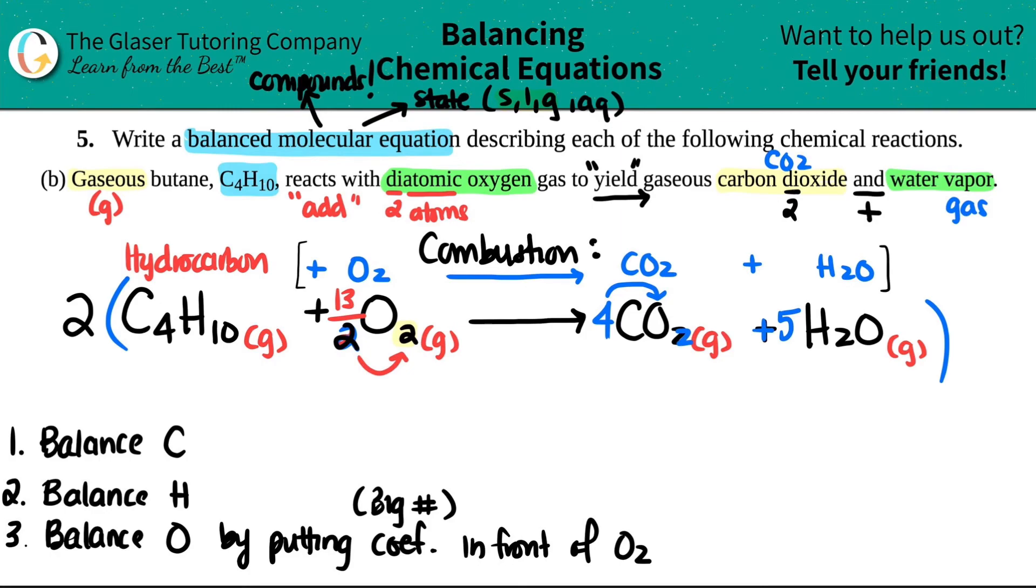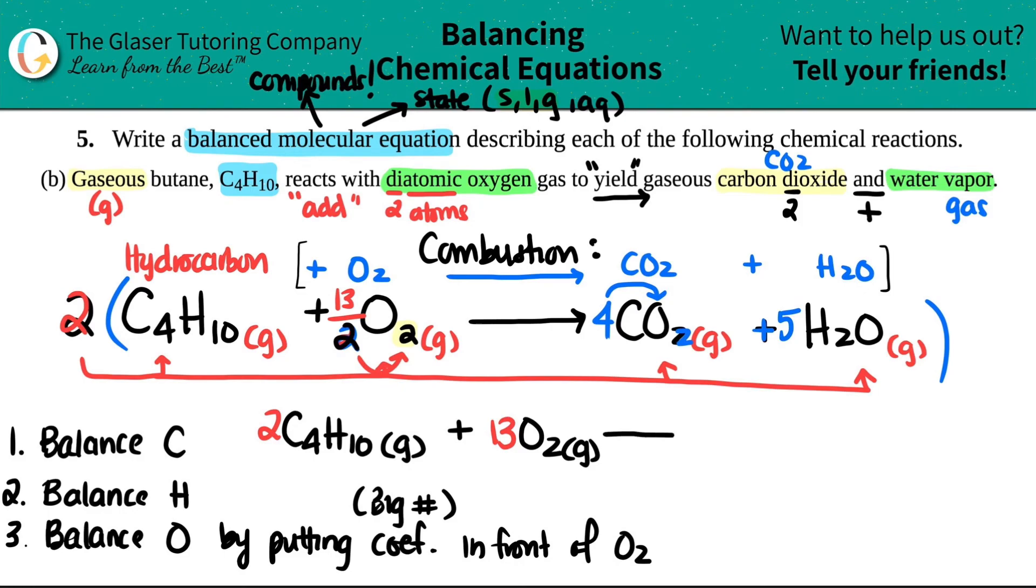But the whole thing here is that you have to be fair. You have to take this two and put it to everyone in the formula. And you're only going to be changing the coefficients. Remember, you can never change the subscripts. So these numbers stay put. You can only change the big numbers that you actually put in. So instead of having one C4H10, you will have two C4H10s. And you got to include those states. So gas plus two times 13 over two is just 13. And that gets rid of the problem that we don't have a fraction anymore. Two times four is eight. So now I have eight CO2s. And that's a gas. Plus two times five is 10. So I have 10 H2Os. And that's a gas.